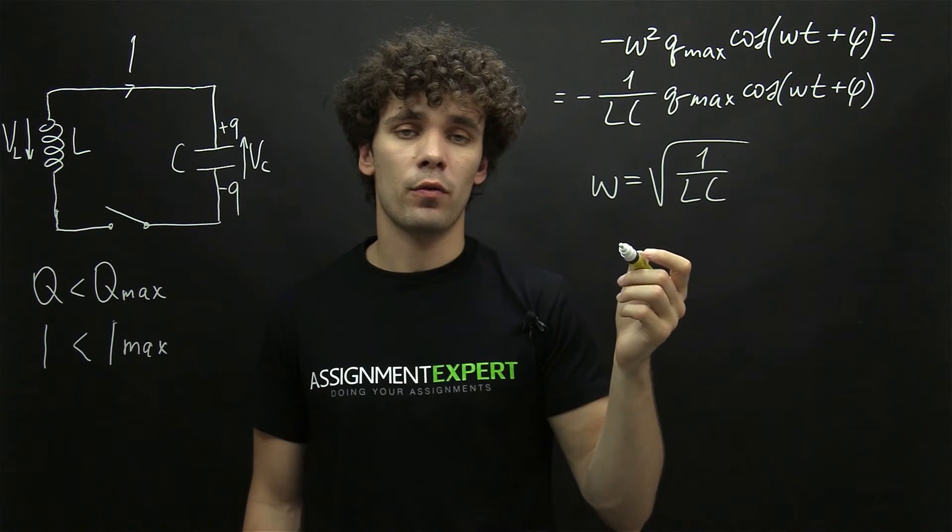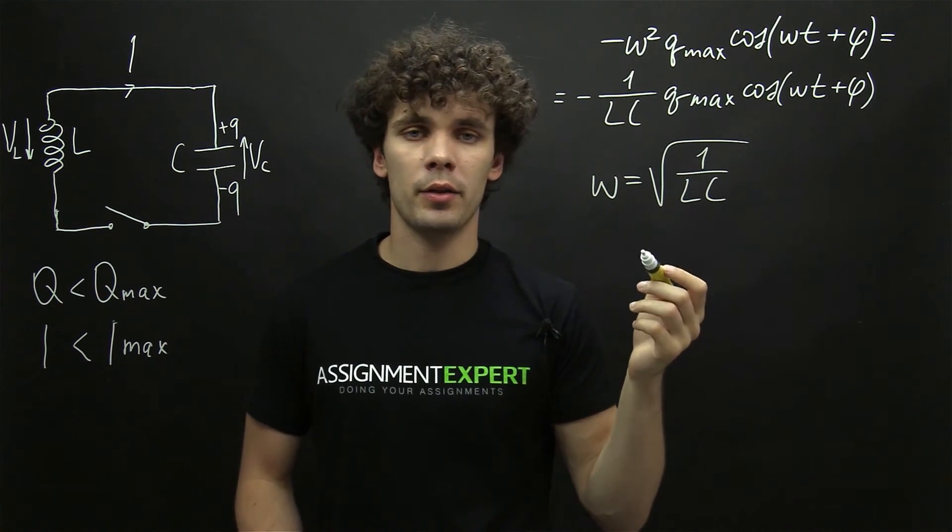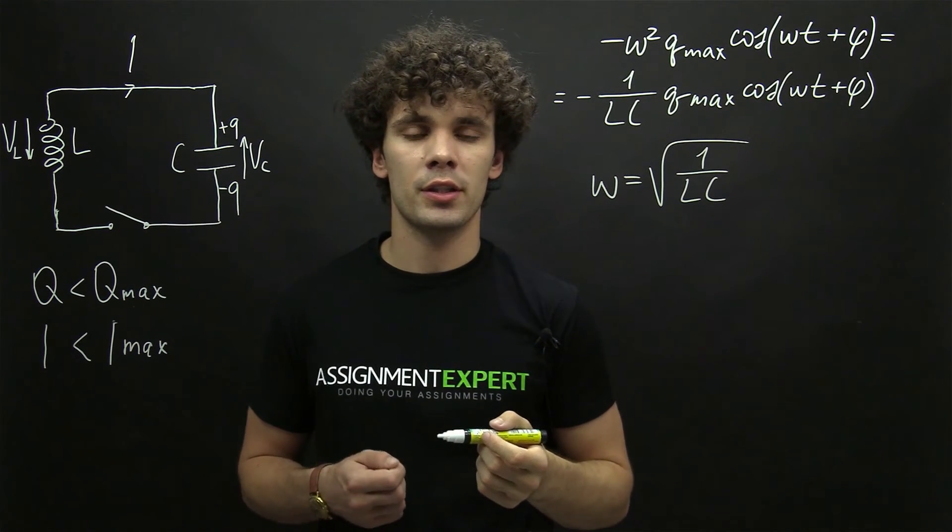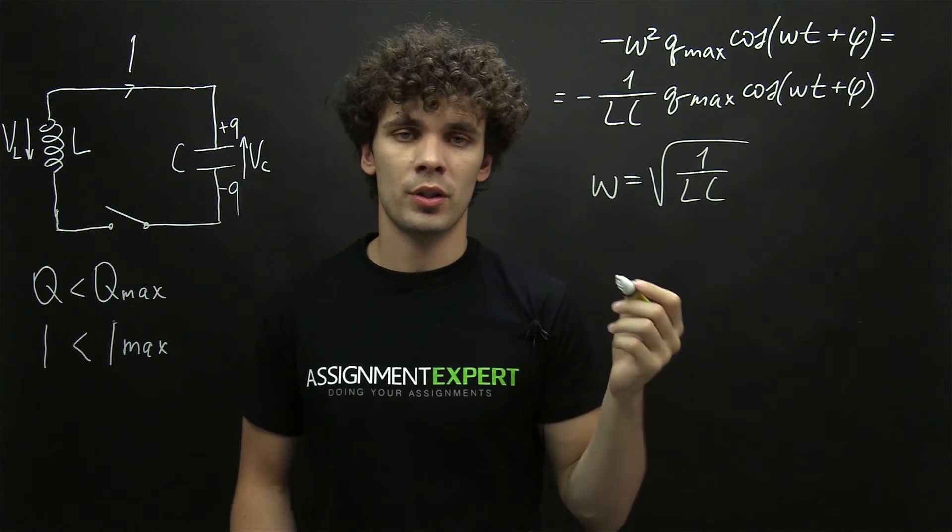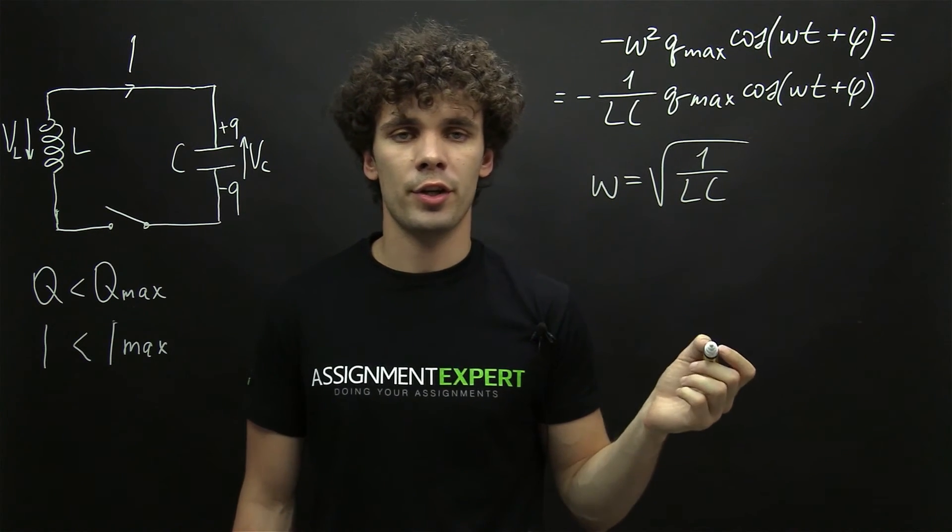So this is the formula for the angular frequency and it means that our LC circuit is an oscillating circuit. And now we just need to transition from the angular frequency to a simple frequency, and this is very easy.